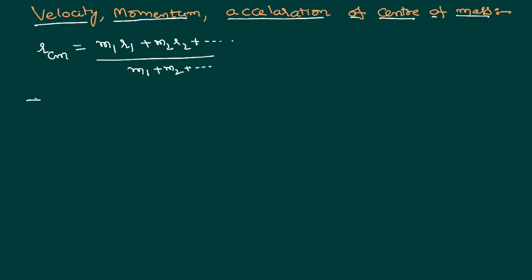Suppose we want to calculate the velocity of the center of mass of the system. We know velocity is defined as the rate of change of displacement or position. So we can write D/DT of R_CM — that means we have to differentiate the position vector once with respect to time to get the velocity of the center of mass.